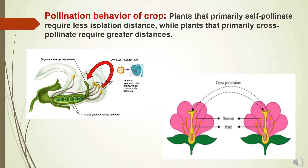In the case of self-pollination, pollen from the anther falls on the stigma of the same flower. While in the case of cross-pollination, pollen from one plant falls on the stigma of a flower on a different plant.